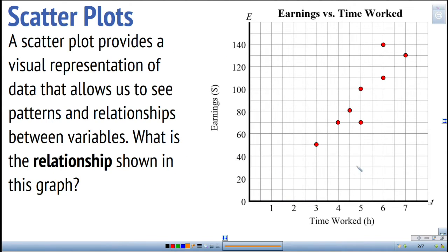Here's some information relating the time worked and the earnings of eight different people. For instance, this person worked three hours and made fifty dollars, and this person worked five hours and made seventy dollars. Looking at this graph for eight different people, you can see there's a bit of a pattern.